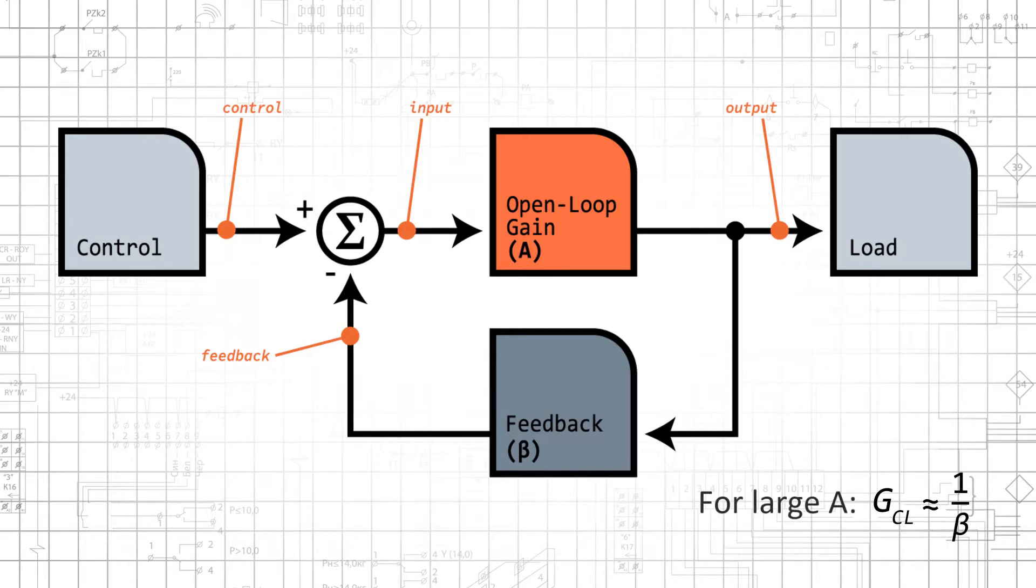However, if we assume that A is very large, this simplifies to simply 1 over beta. As long as the amplifier's open-loop gain is very high, the gain of the system is determined by the components that are used to reduce the amplitude of the output signal before it is fed back to the input.